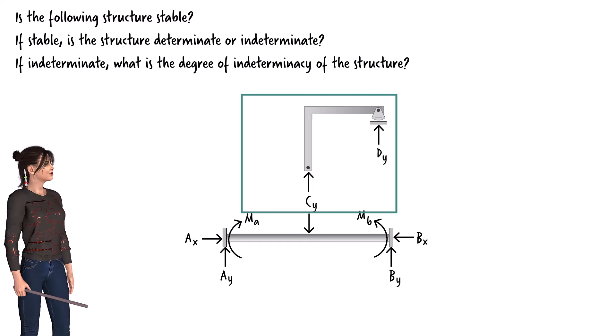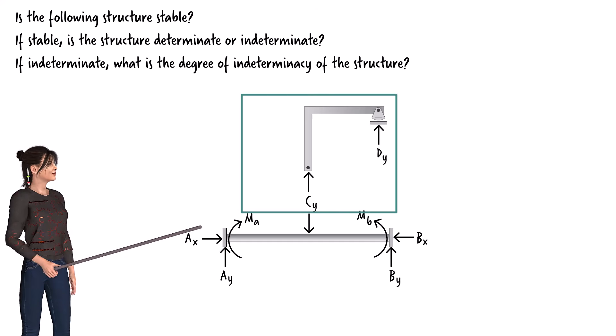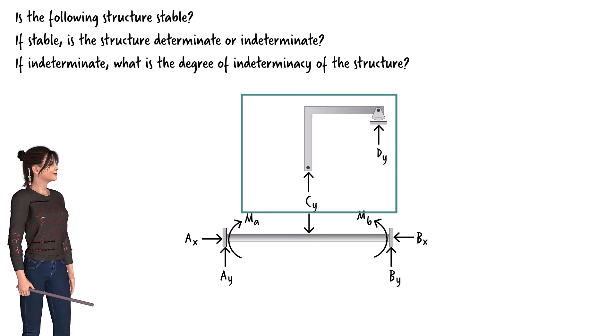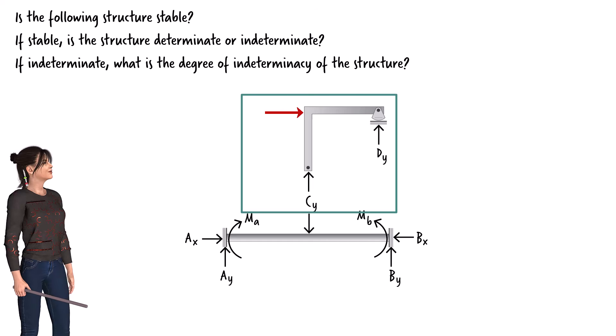For the entire structure to be in equilibrium, each part needs to satisfy the equilibrium conditions. However, if we examine the frame closely, we can see that it is supported by two vertical reaction forces only. This means that if we subject the frame to a horizontal load, since there is no reaction force in the horizontal direction, the sum of the forces in that direction for the frame does not add up to zero.